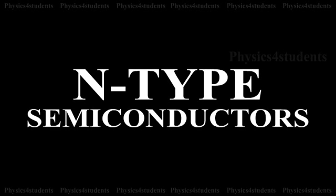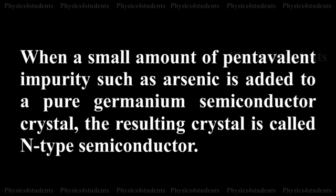Let us see what n-type semiconductors are. When a small amount of pentavalent impurity such as arsenic is added to a pure germanium semiconductor crystal, the resulting crystal is called an n-type semiconductor.